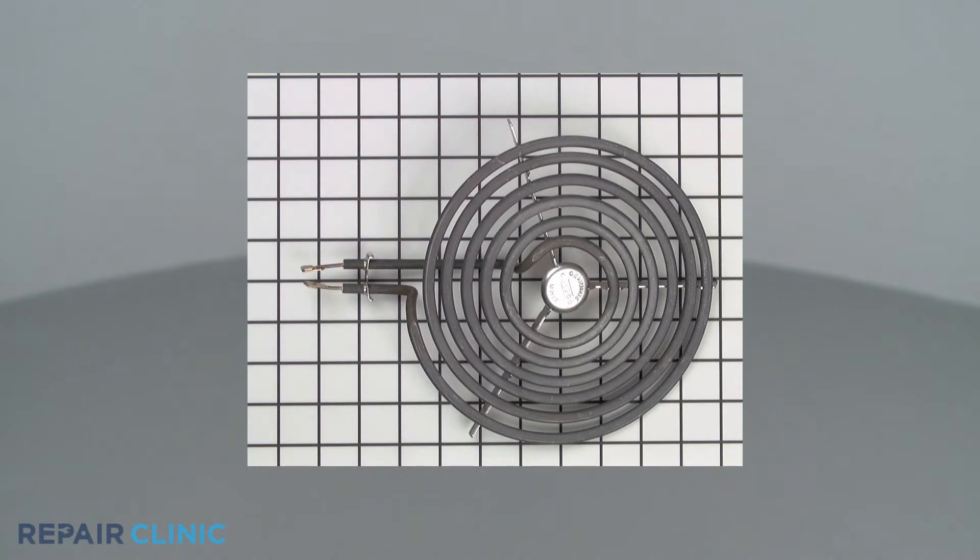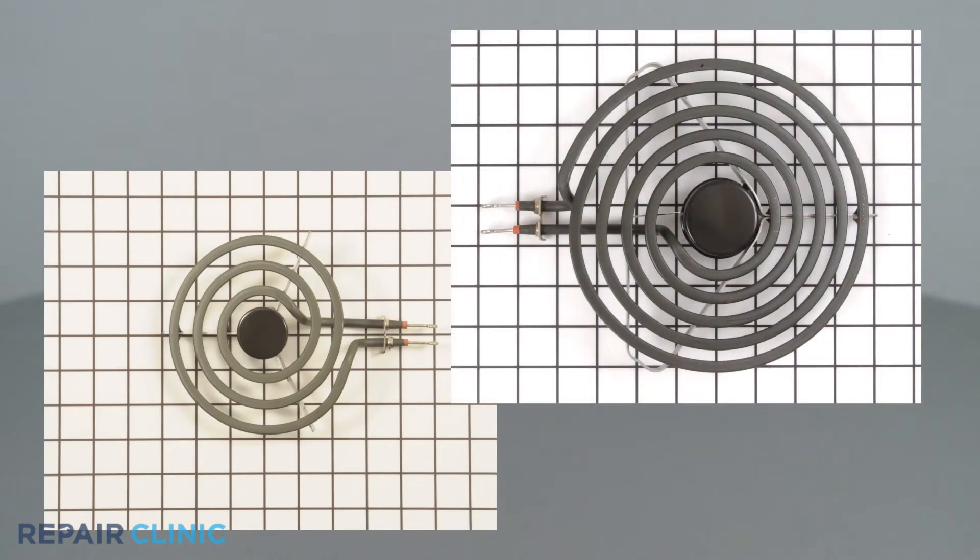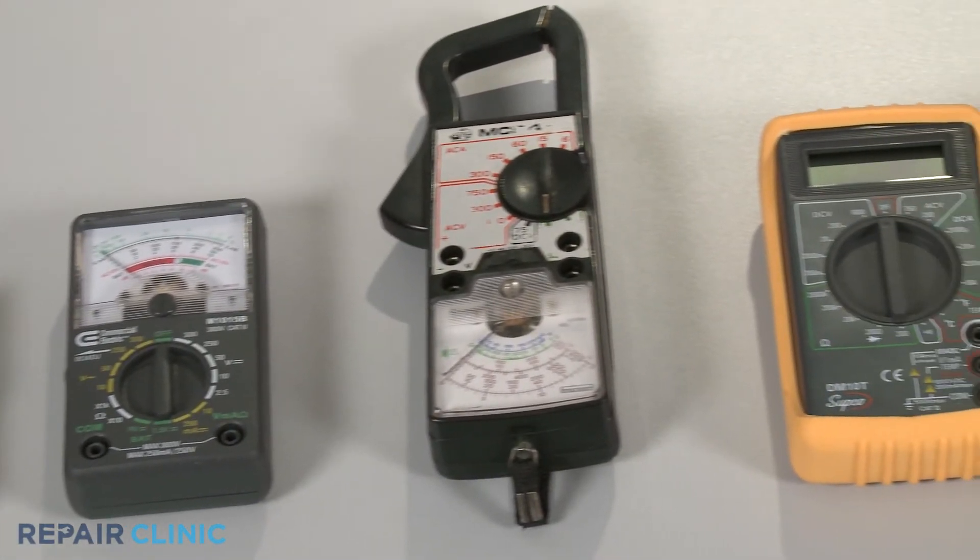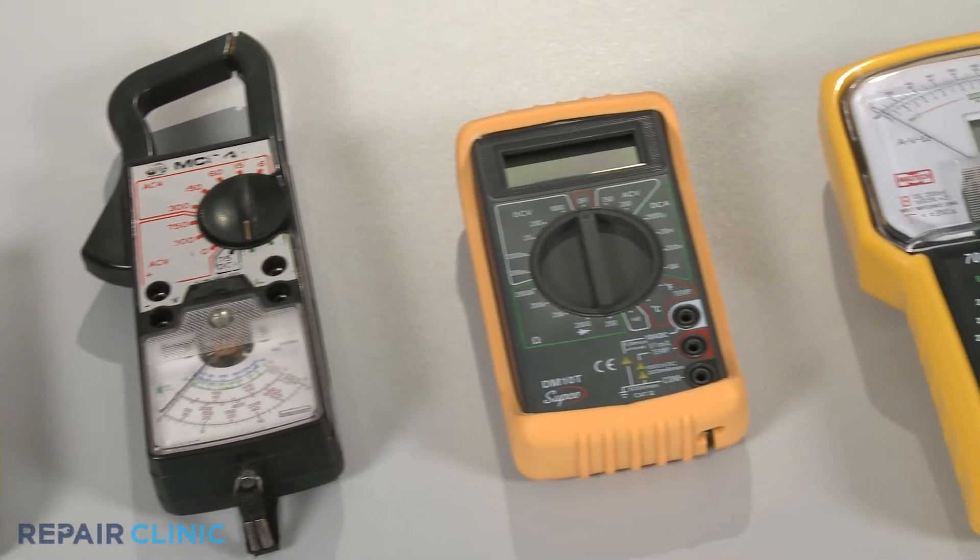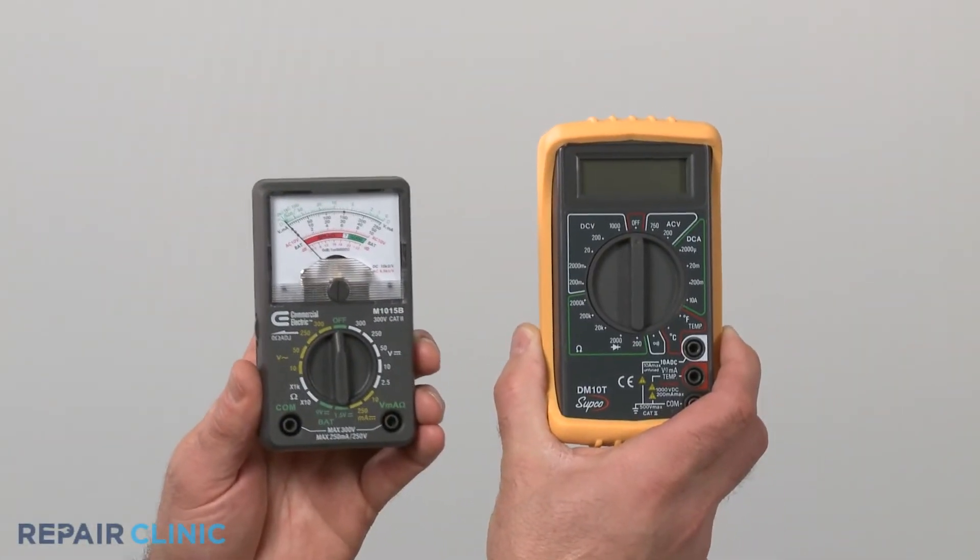Surface coil elements come in many shapes and sizes, but all of them can be tested for continuity in the same way. You can choose from a variety of multimeters to perform the test. For this demonstration, we will use both analog and digital models.